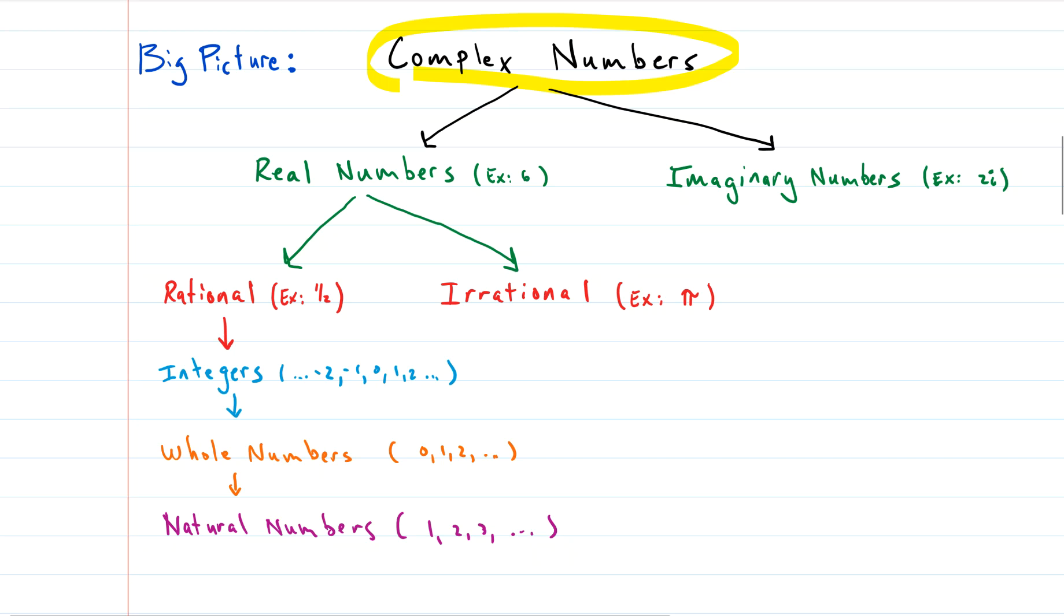In other words, the natural numbers at the bottom, those are also whole numbers and whole numbers are also integers and so on up the tree. So complex numbers can be broken down into two categories: the real numbers and the imaginary numbers. So real numbers are complex numbers and imaginary numbers are complex numbers.